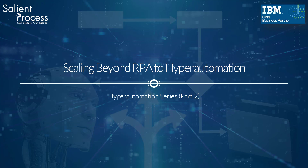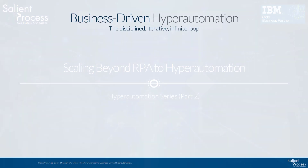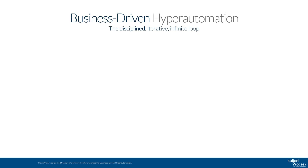This is the second in a series of presentations on hyperautomation. Previously, in part one of this series, we covered the disciplined, iterative, infinite loop that describes business-driven hyperautomation. Let's quickly review before moving into Scaling Beyond RPA.